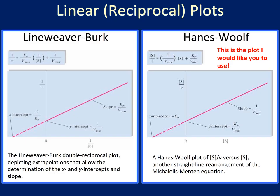Here are two linear plots that you could use. The Lineweaver-Burk on the left is the reciprocal of substrate versus the reciprocal of the velocity, in which the y-intercept is 1 over Vmax and the x-intercept is minus 1 over Km. On the right is the Hanes-Woolf plot, which is substrate on the x-axis versus substrate over velocity on the y-axis, in which the x-intercept is minus Km and the y-intercept is Km over Vmax. I would prefer the use of Hanes-Woolf over Lineweaver-Burk, because the Hanes-Woolf doesn't emphasize the higher concentrations as much, which can bias your data.